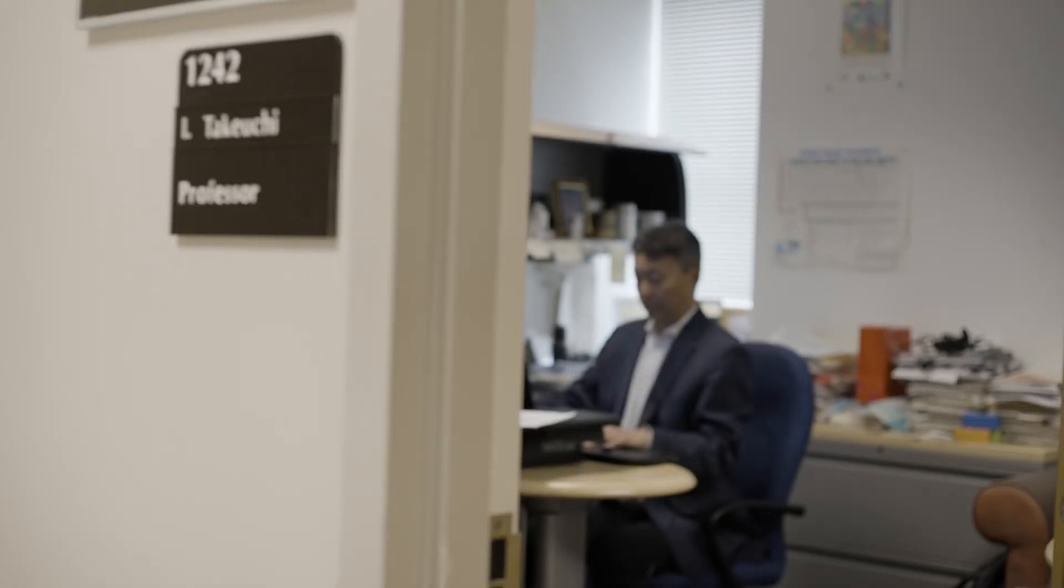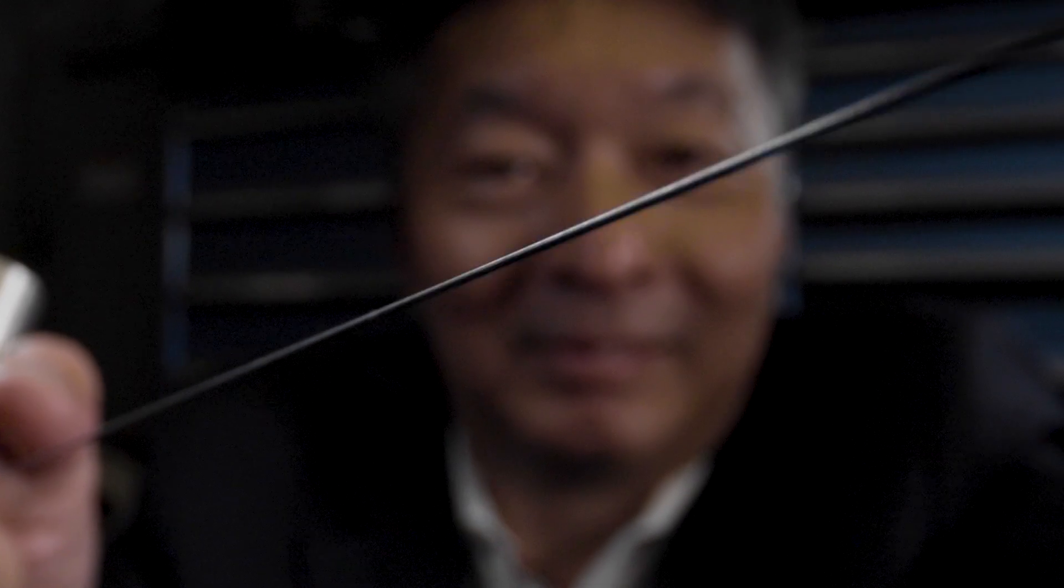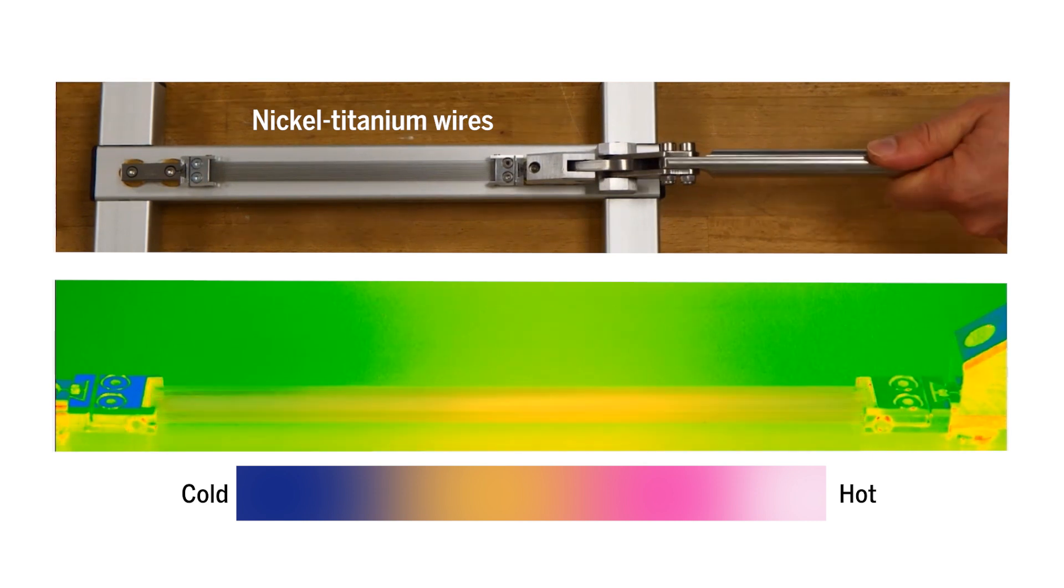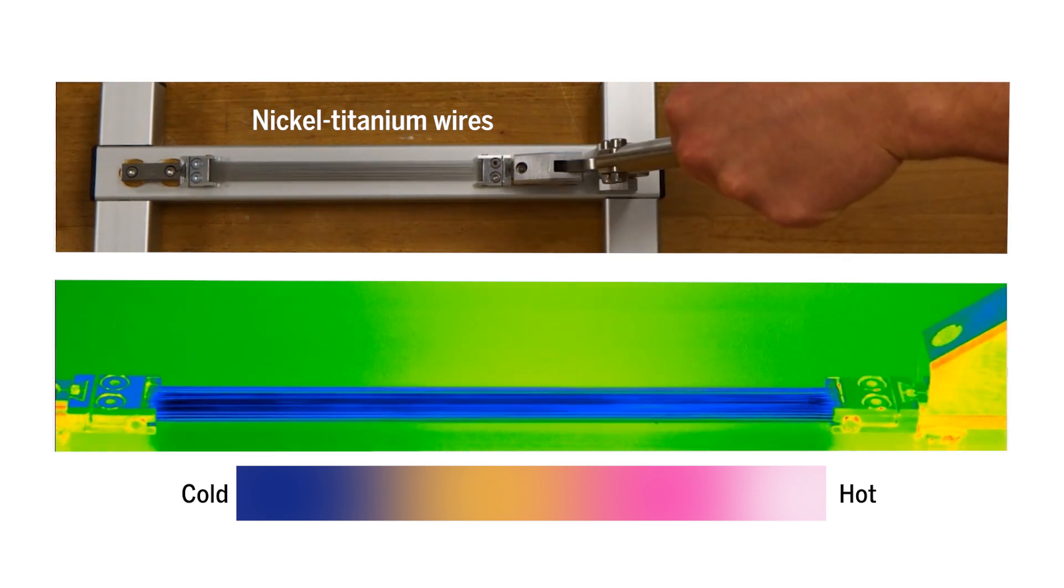And that's why we started thinking that we can make cooling devices by stretching nickel titanium wire. So we stretch it and it actually releases heat, and you unstretch, it's cooling its surrounding.